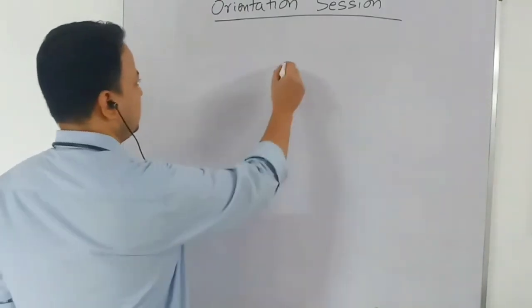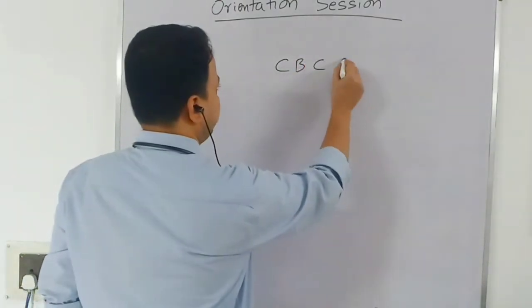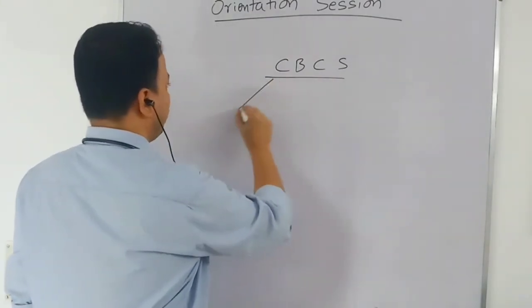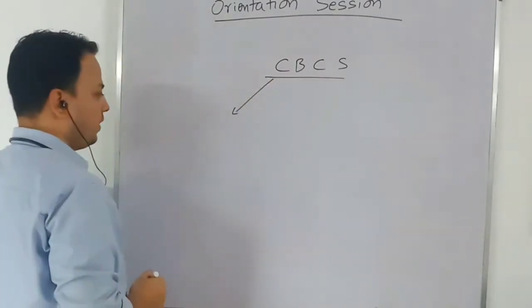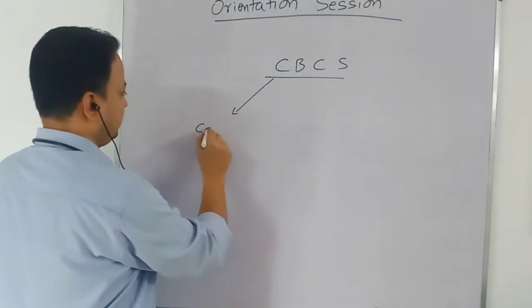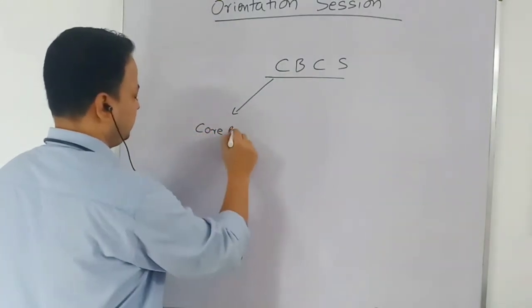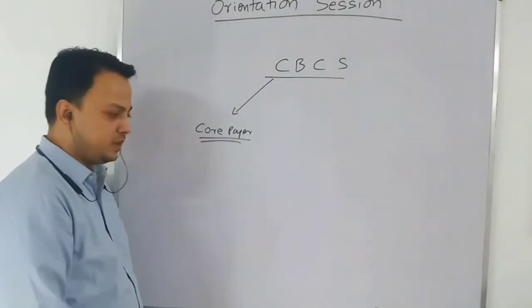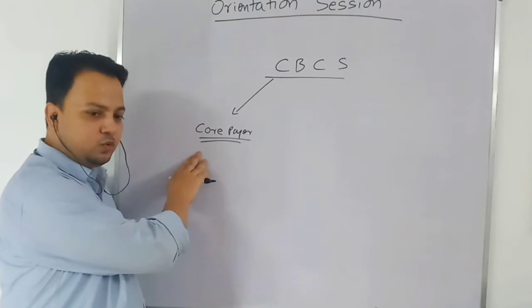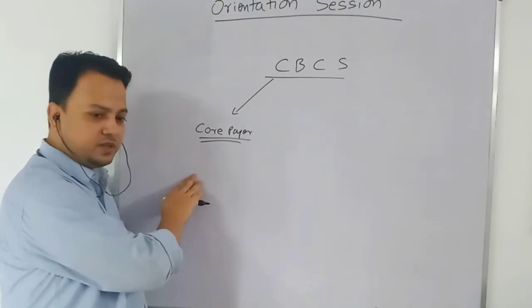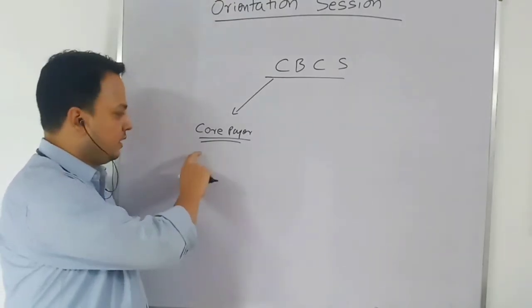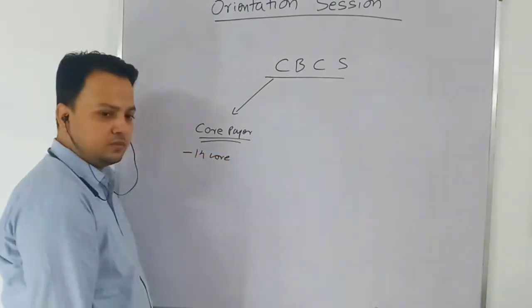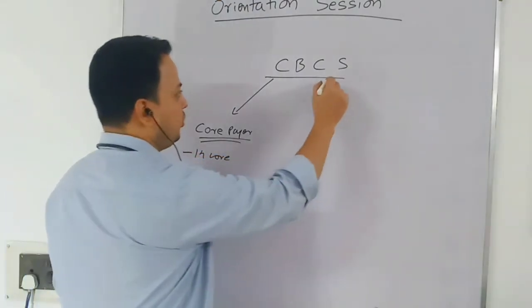So in the CBCS system, the first thing you will be familiarized with is the core paper. This is a compulsory paper. In the first semester you get two core papers, in the second semester two core papers, and in total you have to complete 14 core papers. Then you have elective papers.